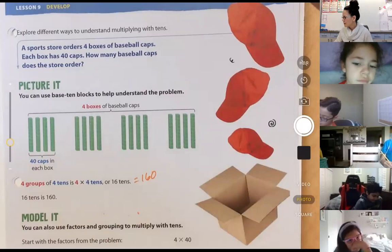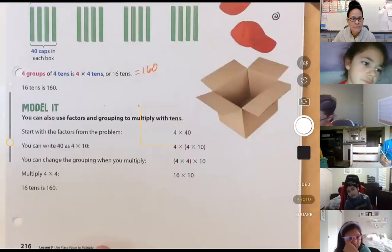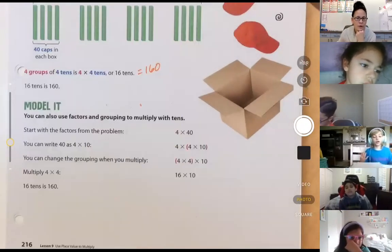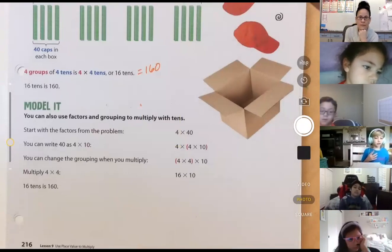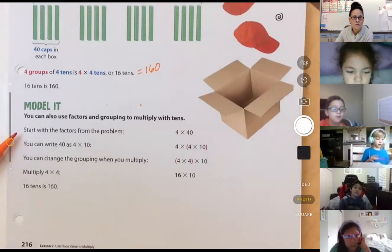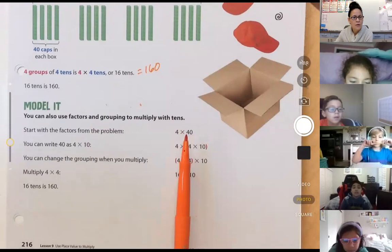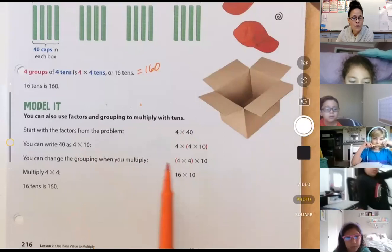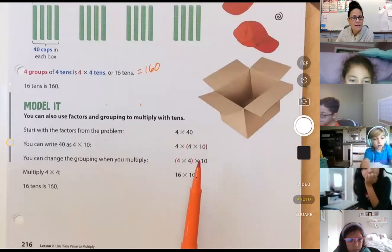Okay, please take a look down at the bottom of the page. This next model. Then we're getting back to the parentheses, we're getting back to the associative property, we're going to be doing some mental math. You can see you can start with the factors from the problem. We have four groups of 40. You can also write 40 as 4 times 10. Say 4 times 4 times 10.